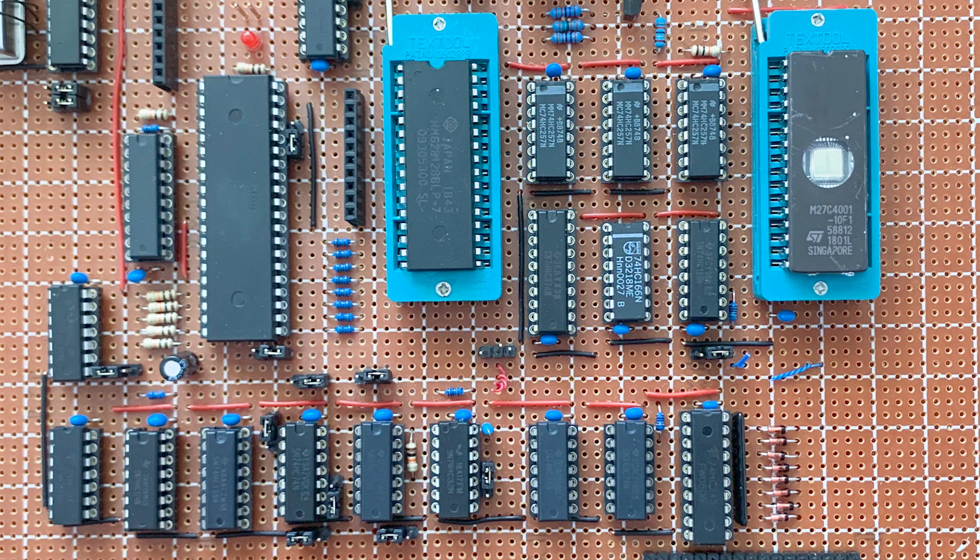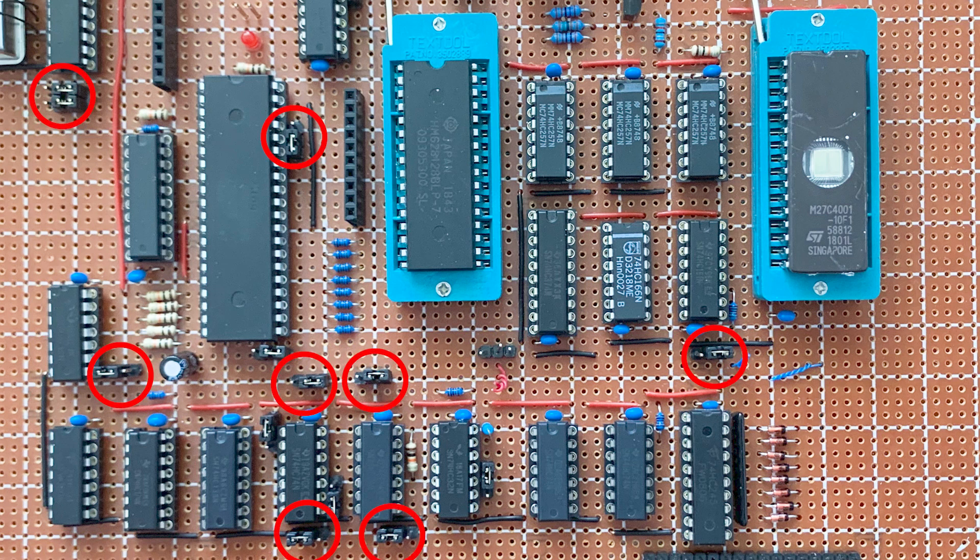Often when I want to add a new feature, I'll leave in the old circuit and install jumpers to enable the new circuit as well. This lets me jump between old and new configurations, making debugging a lot easier.